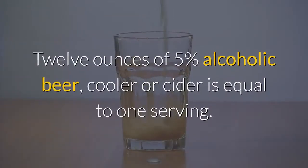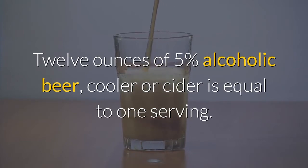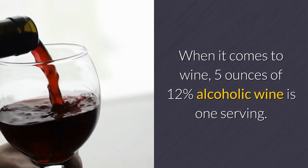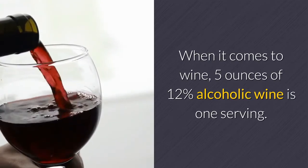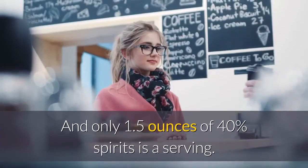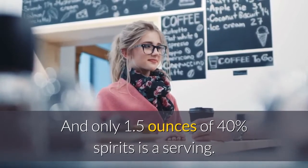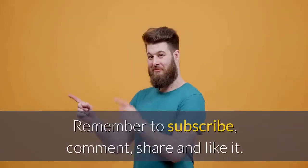12 ounces of 5% alcoholic beer, cooler or cider is equal to one serving. When it comes to wine, 5 ounces of 12% alcoholic wine is one serving. And only 1.5 ounces of 40% spirits is a serving.